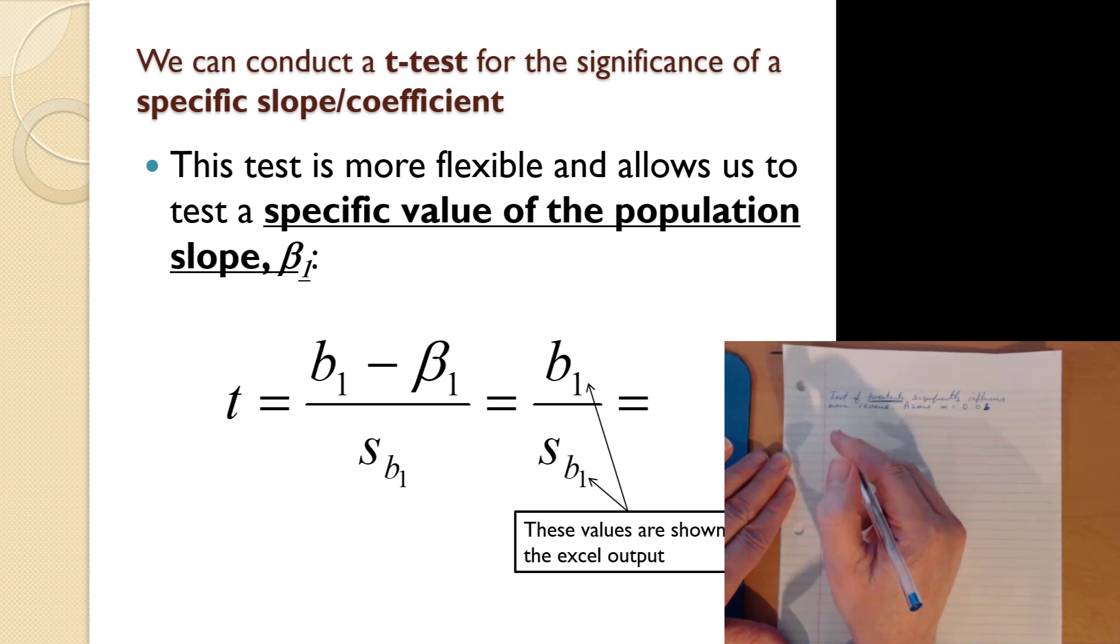When we test for a specific coefficient we still have an H0, we still have an HA, we still have a level of significance. We have a test statistic which is now the t-stat. We have a p-value, we make a decision, we draw a conclusion. The same six steps still apply.